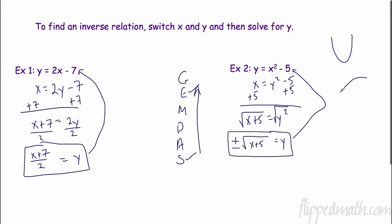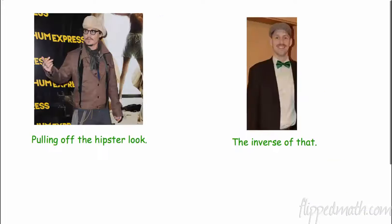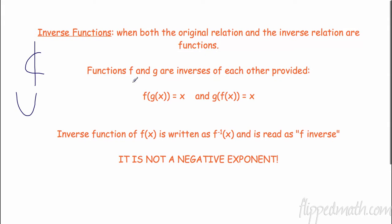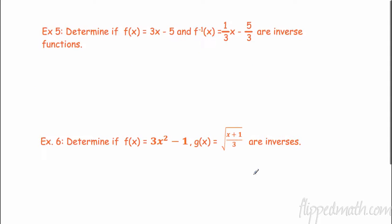When we took the square root example earlier, the inverse had two parts and its graph was not a function — so those are not inverse functions. Functions f and g are inverses of each other provided that f(g(x)) = x, and g(f(x)) = x. The inverse of f(x) is written as f⁻¹(x), read as 'f inverse.' It is not a negative exponent — you are not putting it over 1 — it is shorthand notation for the inverse.